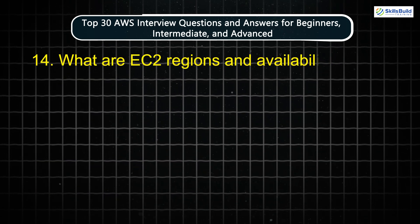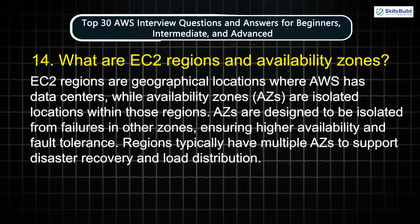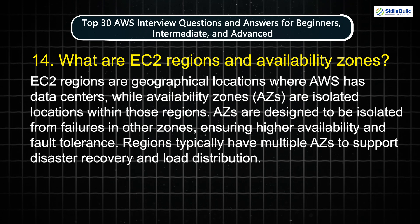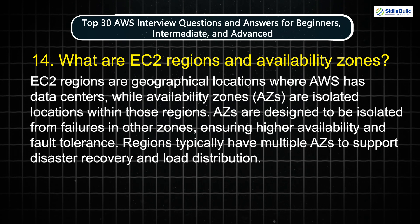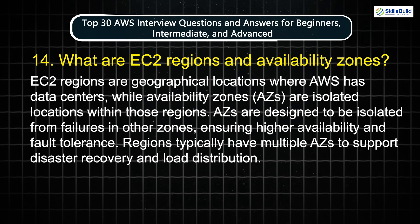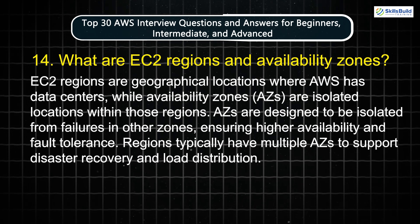Question 14: What are EC2 regions and availability zones? EC2 regions are geographical locations where AWS has data centers, while availability zones are isolated locations within those regions. AZs are designed to be isolated from failures in other zones, ensuring higher availability and fault tolerance. Regions typically have multiple AZs to support disaster recovery and load distribution.